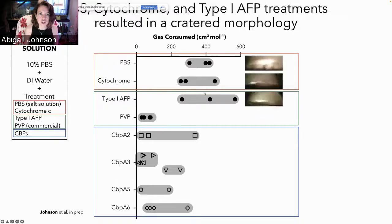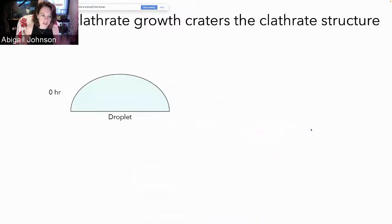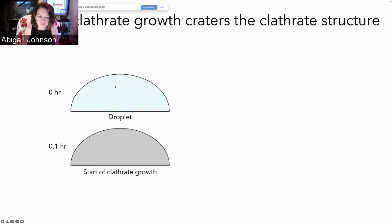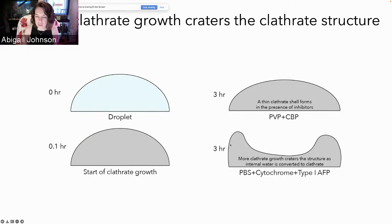In terms of morphology, PBS, cytochrome, and Type 1 AFP treatments resulted in a more cratered morphology with a dip in the center of the droplet, whereas PVP and the CBPs produced a dome shape. We think a very thin clathrate shell forms in the presence of those inhibitors, whereas with PBS, cytochrome, and Type 1 AFP there is more clathrate growth that craters the structure as internal water gets converted to clathrate and pulls up the sides.